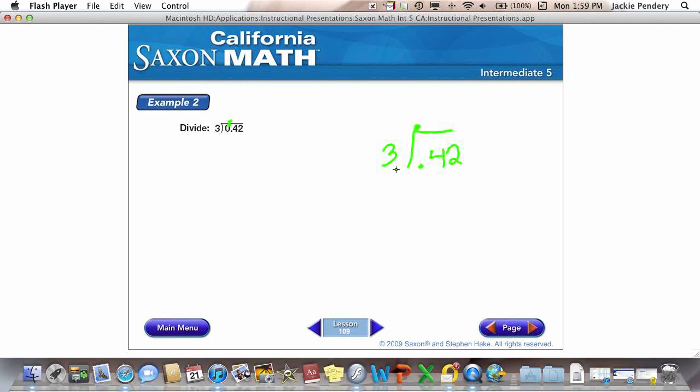And now I leave it alone and I divide. 3 goes into 4 once and I make sure that my 1 is directly over the 4. It's very important that you line these up. 1 times 3 is 3. I subtract.